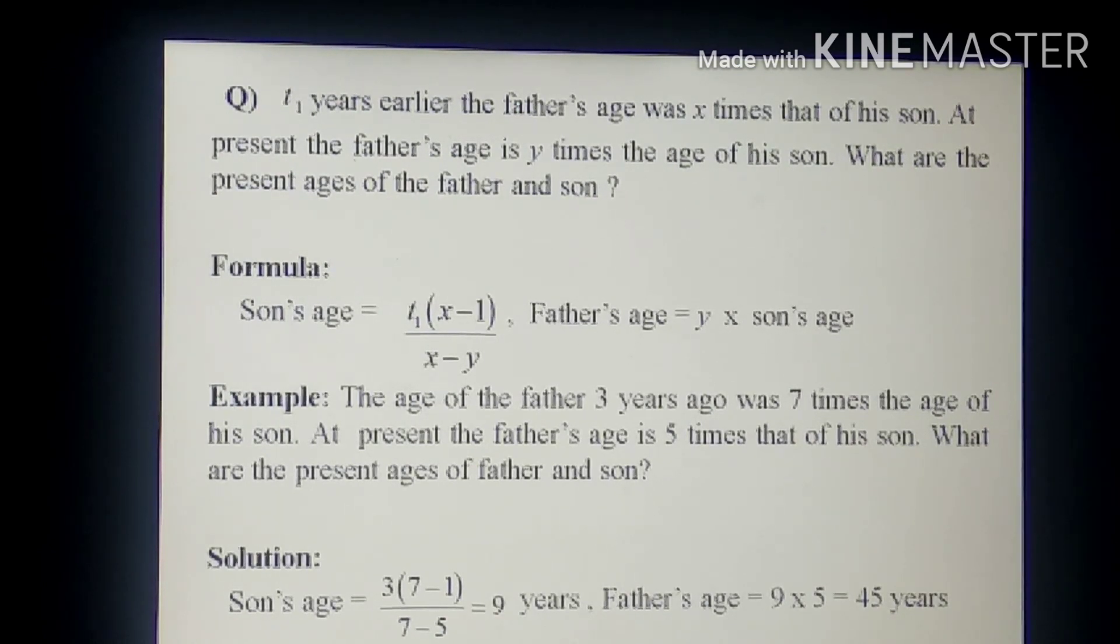So an example here. The age of the father 3 years ago was 7 times the age of his son. At present the father's age is 5 times that of his son. What are the present ages of father and son?